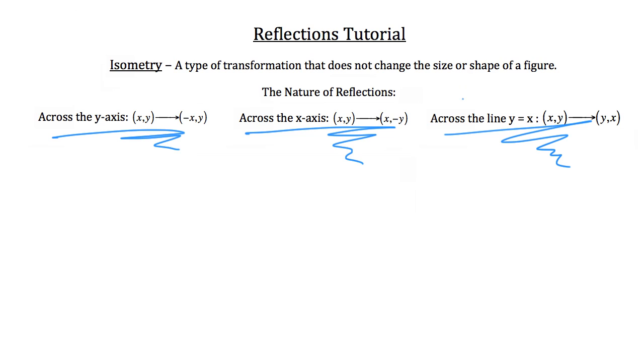Lastly, when looking at a reflection across the line y is equal to x, all we have to do in this case is take what the original coordinate point was for one of the coordinates in that figure and switch the x and y coordinates of that coordinate point. So now the y comes first, the y is the new x, and the x is now the y. I'm going to show you an example of each of these types of reflections.